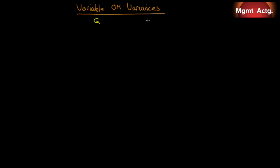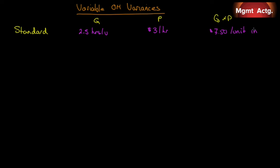Now let's move on to the variable overhead variance — variable only. You'll see it's the same structure. Our standard quantity is 2.5 hours per unit, same as direct labor hours. Our standard overhead rate is $3 per hour variable, so variable overhead is $7.50 per unit. Actual hours used were 5,400 and actual variable overhead cost came in at an average of $2.85 per hour. Output was 2,000 units.